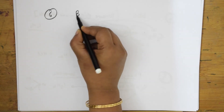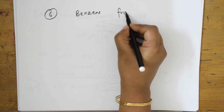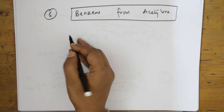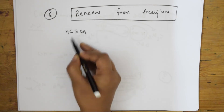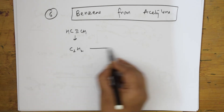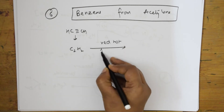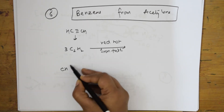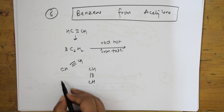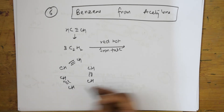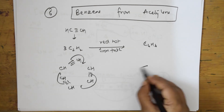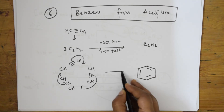I can also prepare benzene from acetylene — you can use this as a conversion question too. Acetylene is C2H2. I am going to introduce a red-hot iron tube. I have shown this reaction in polymerization also. Three molecules of acetylene undergo polymerization: the hydrogens shift and finally form benzene C6H6. This is called the polymerization reaction.